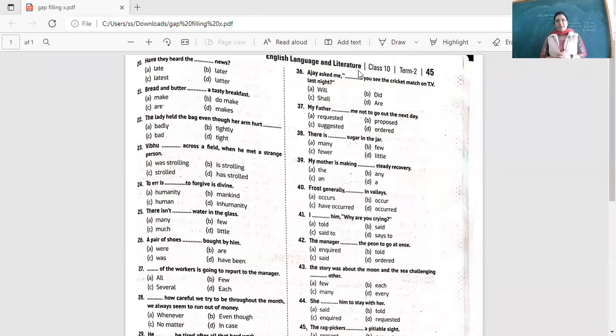Next is, my mother is making dash steady recovery. My mother is making, yes, which article are we going to use over here? My mother is making a steady recovery. Frost generally dash in valleys. Frost. Frost generally occur in valley, occurs in valley, have occurred or occurred. Frost generally occurs in valley, yes, so it is there, it happens over there, this is where, have occurred is wrong.